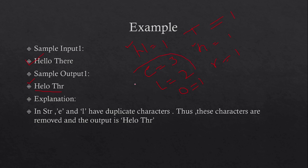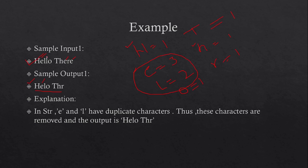Here e and l are duplicate characters, but you have to keep the first occurrence. The first e appears early in the string — you keep that e in the output string and remove all other occurrences of e. Same for l: l appears twice, you keep the first l and remove the second l.